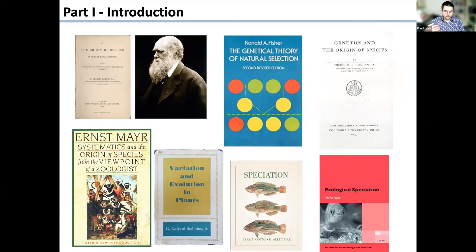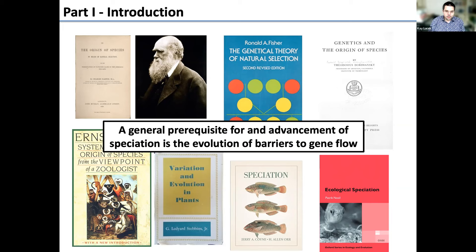These different types of theories often disagree with each other, but there's one unifying thing: for speciation we basically need barriers to gene flow. There are different types of barriers, and for the macroevolutionary part we'll talk about a classic type — changes in chromosome numbers.